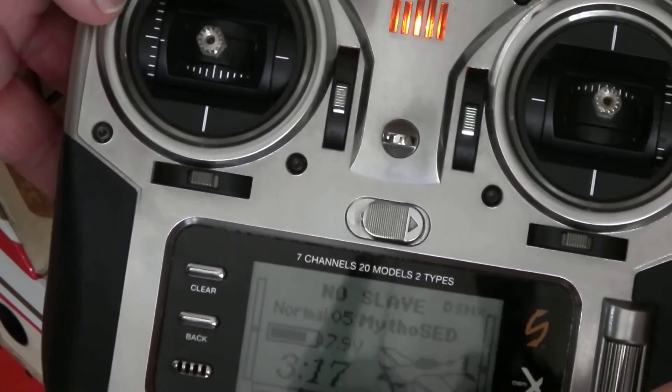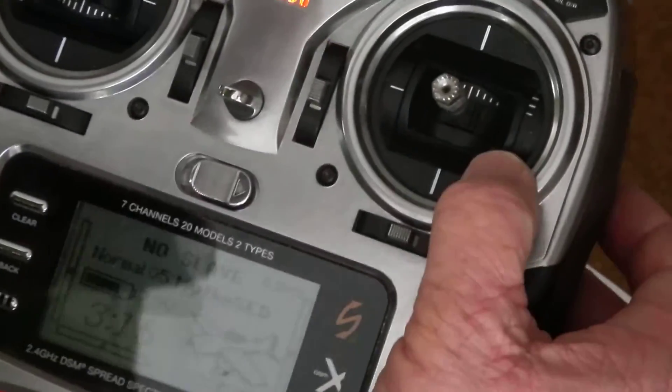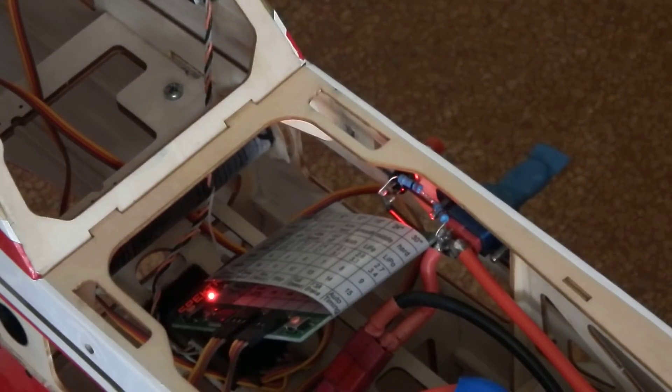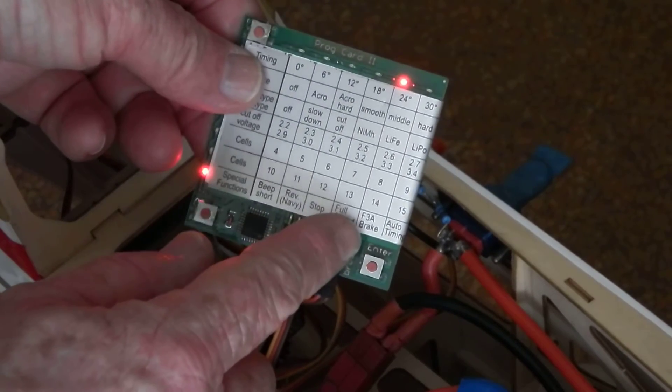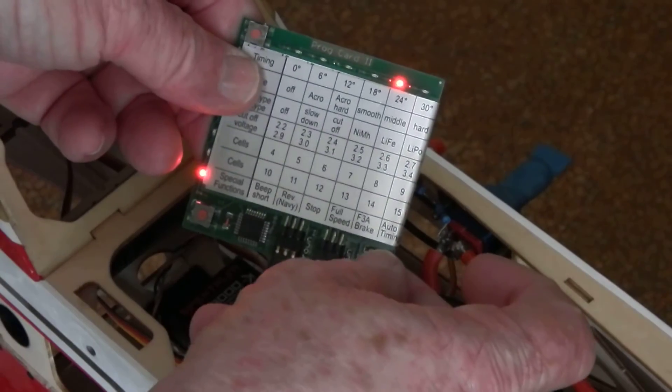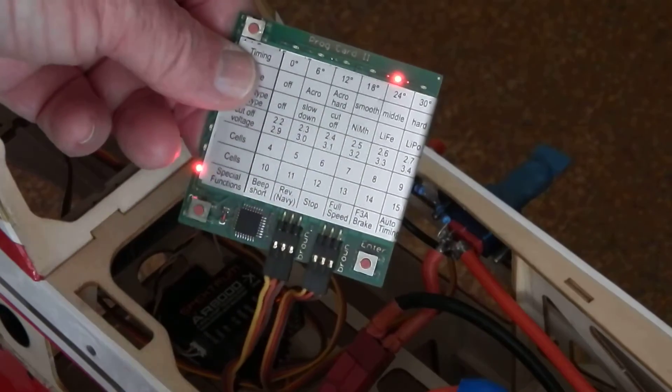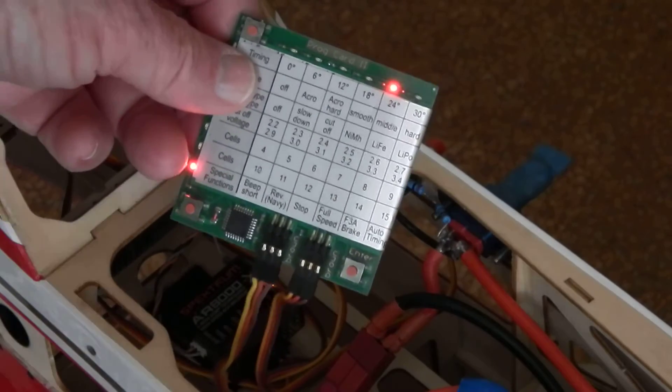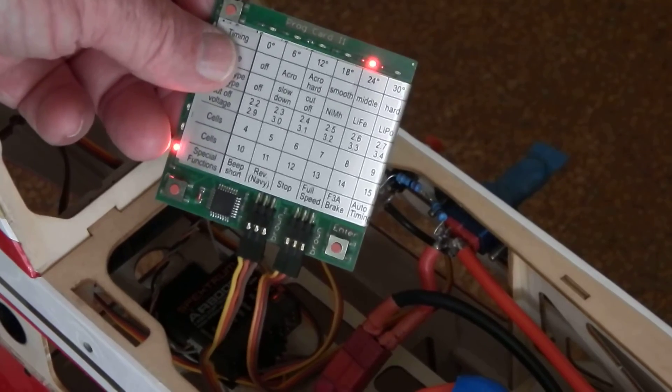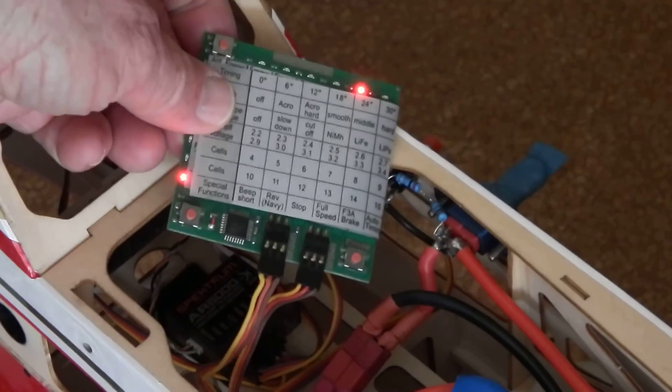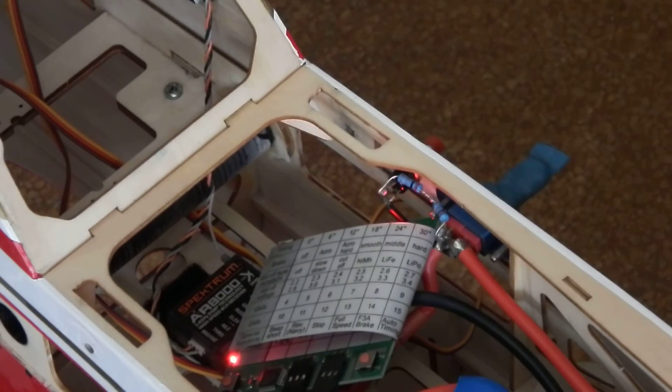Then with this set on special functions F3A brake, you press enter, and that's how much brake will be applied when the throttle is set off during a downline. I hope that's given you enough information.